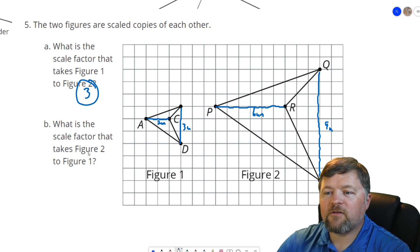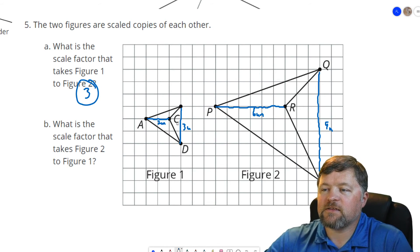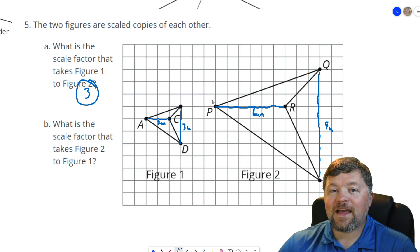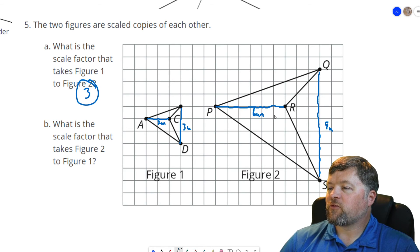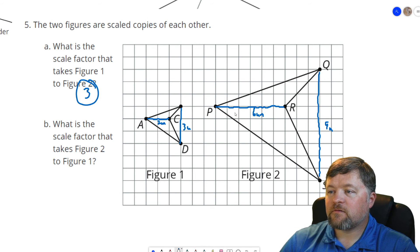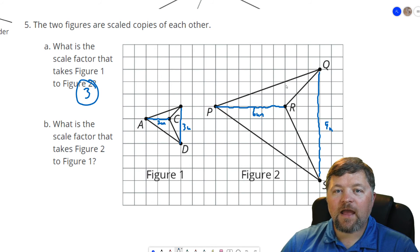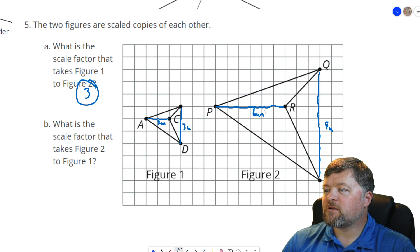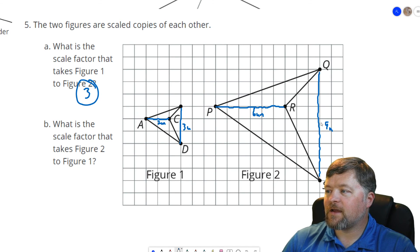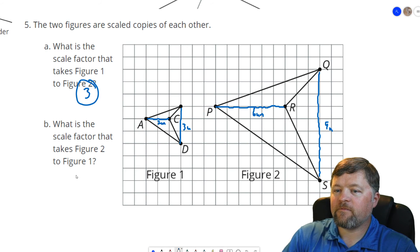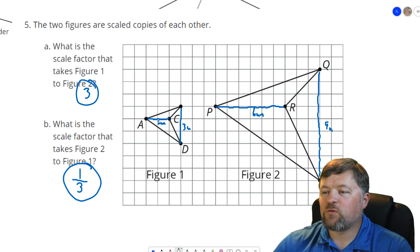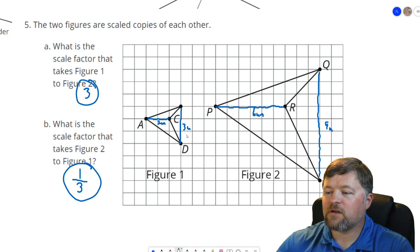What's the scale factor from figure two to figure one, to go from this to this? Would you say that's three times smaller? A lot of people want to say that, but that is not how this works. Three times bigger, but three times smaller is not how we think about scale factor. Scale factor is what do we multiply this by to get this? What do we multiply six by to get two? What do we multiply nine by to get three? The scale factor for that is one third. Six times one third is two. Nine times one third is three.